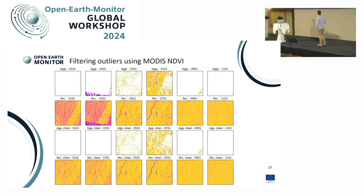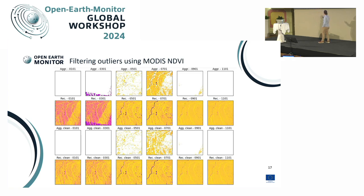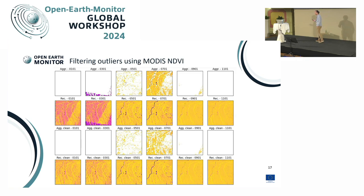For outlier removal, this comparison shows what we currently have in version 1 versus the improved result. In Norway, for instance, there is a non-detected cloud present in the aggregated product that propagates into the reconstructed tiles. Masking with MODIS allows us to remove this and other small surrounding artifacts, resulting in a much cleaner final product.